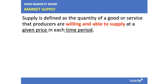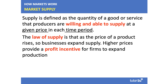Supply is defined as the quantity or the volume of a good or service that the supplier or the producer is willing and able to supply to the market at a given price in each time period. The law of supply is that as the price of a product goes up, perhaps because there's been an outward shift of demand, businesses look to expand their production. Higher prices provide a profit incentive for businesses to increase production.